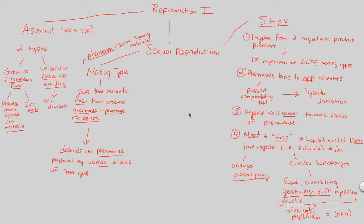We're going to jump back into what we were talking about in terms of reproduction. Right now we have this moment at which a lot of students get confused. We have plasmogamy, where we have two nuclei from two different fungi that are not fused — only the cells themselves are fused. Thus we have this N plus N dikaryotic heterokaryon state. 'Heteron' means different, and 'karyon' refers to nuclei. So the nuclei are different right now. How does this ever result in sexual reproduction?